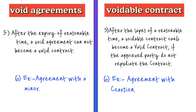The fifth difference is that after the expiry of a reasonable time, a void agreement cannot become a valid contract. But after the lapse of reasonable time, a voidable contract can become a valid contract if the aggrieved party does not repudiate the contract.